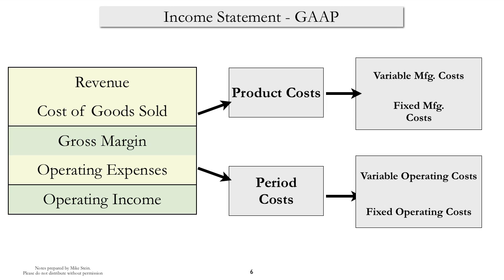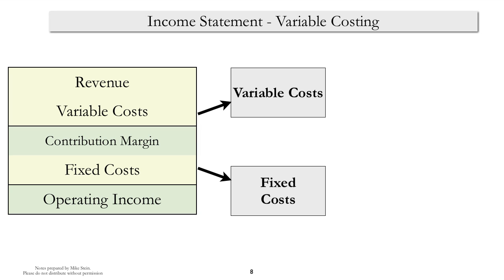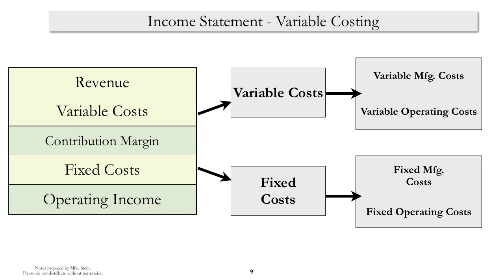In order to emphasize the variable or fixed nature of costs, we reformat the income statement in managerial accounting and often use what's called either a variable costing or contribution margin formatting. Here we have revenue minus variable cost equal contribution margin, then we subtract off fixed costs to get at operating income. What you can see here is that we've gathered together all the variable costs and all of the fixed costs, regardless of whether those costs are manufacturing or operating costs. This formatting turns out to be very important and something we will use frequently in the remainder of the course.